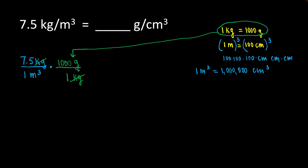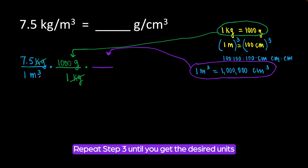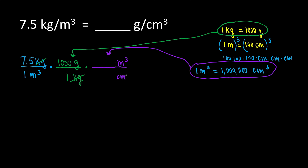Do not stop because we need to get grams per centimeter cubic, so we need to get rid of cubic meters. We are going to use this conversion factor: one cubic meter is equal to 1,000,000 cubic centimeters. We plug it in so our cubic meters cancel out. I have cubic meters on the bottom in the denominator, so I will put cubic meters on top in the numerator and cubic centimeters on the bottom. My cubic meters cancel out and I'm left with cubic centimeters.